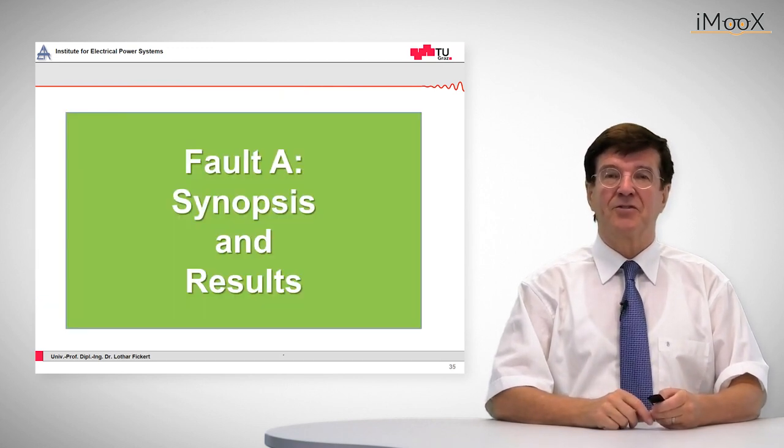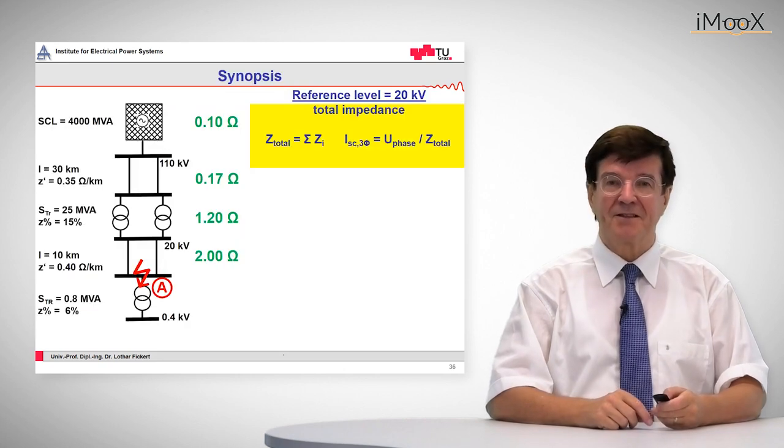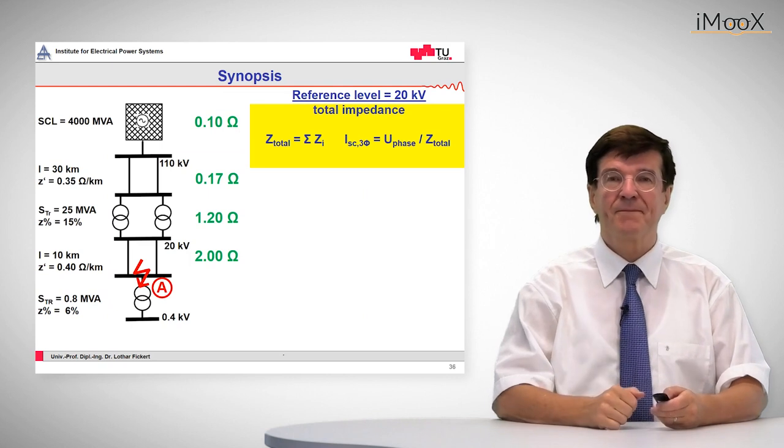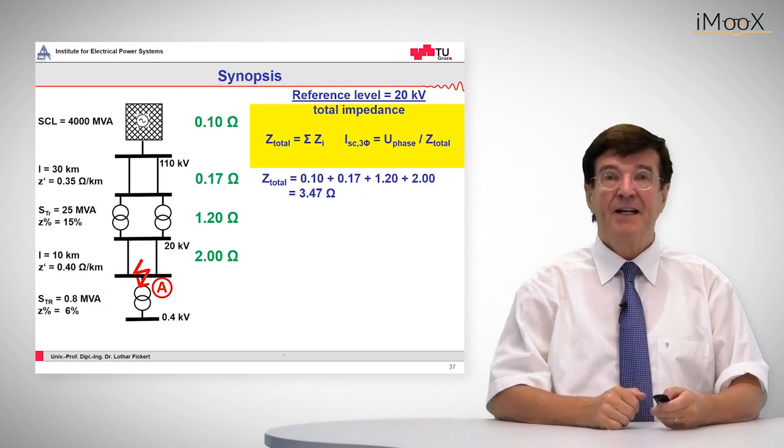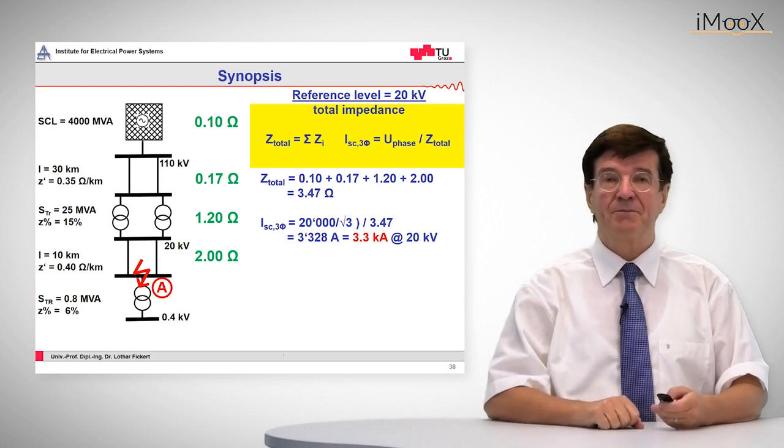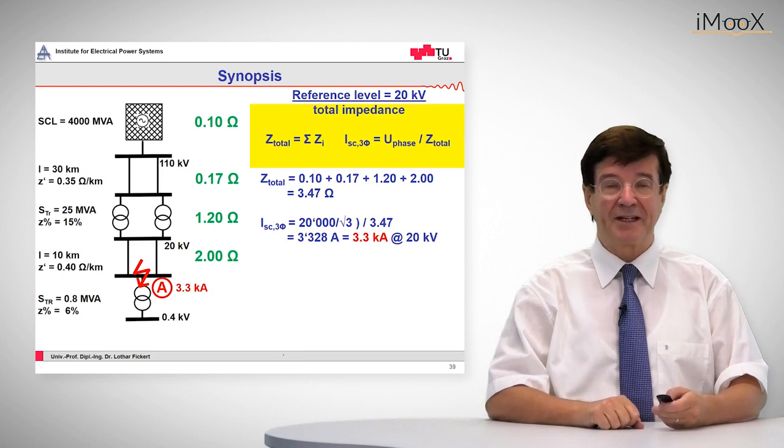So now we can go to the synopsis and take the result. Synopsis means we add up all these impedances, which gives 3.47 ohms, and we have to divide the phase voltage for three-phase fault by this value, and what comes out is a current value of 3.3 kiloamps.